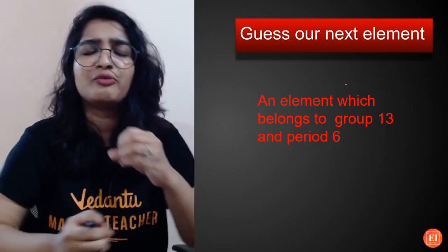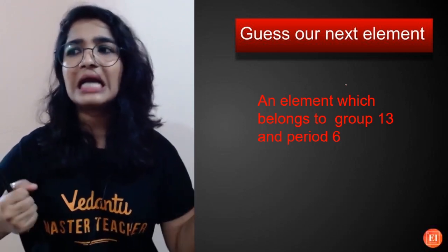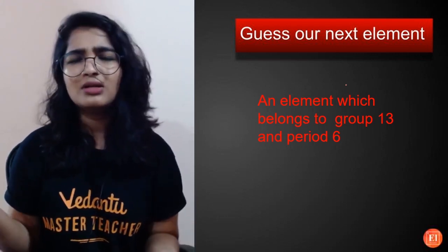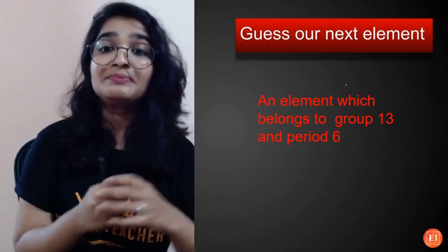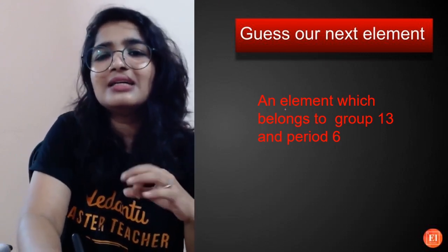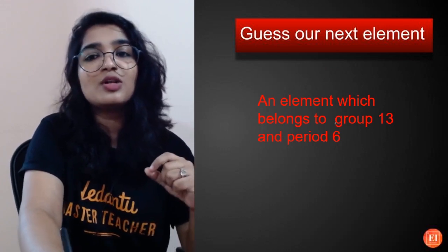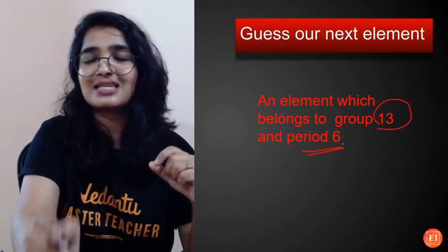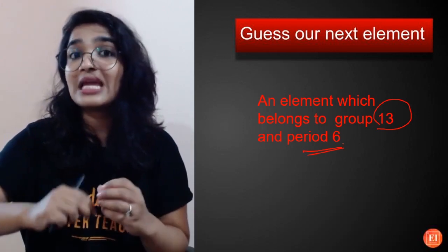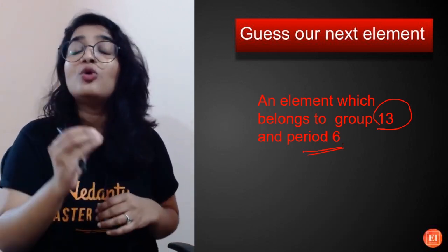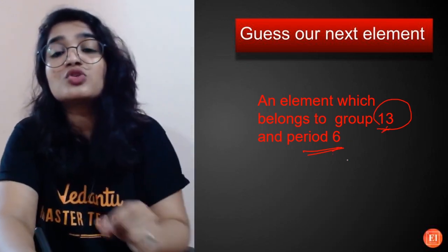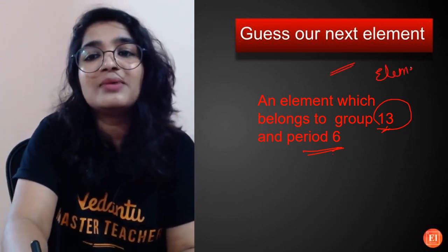That was a very small but very informative video on cesium. Whenever we ask about the most reactive element or most expensive element, we say sodium or gold — but now you know about cesium. Here is your next clue: guess our next element, which belongs to Group 13 and Period 6. If you know the electronic configuration, you can easily identify which group or period an element belongs to. Comment below which element it is!